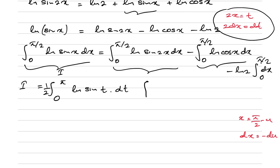Because of the minus sign from dx = −du, the minus signs cancel to give a plus. We change the limits: when x approaches 0, u approaches π/2; and when x approaches π/2, u approaches 0.